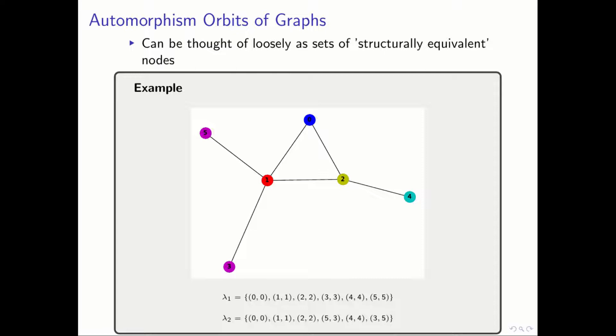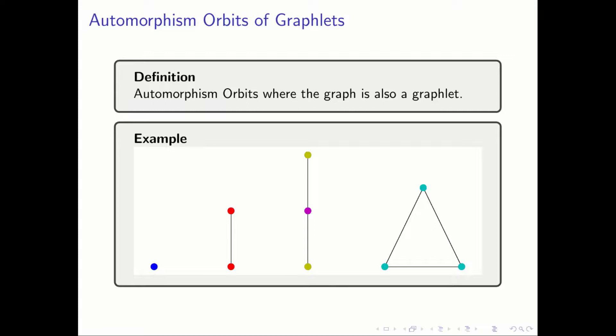An automorphism orbit of a graph is a collection of vertices that have a structurally equivalent position in a graph. This example is a graph colored to illustrate the distinct orbits, and we can see that the vertices 3 and 5 in magenta are part of the same orbit while the other vertices are in their own orbits. Since graphlets themselves are graphs, we can have an automorphism orbit of graphlets just as we can have an automorphism orbit of graphs more generally. The examples are again the singlet, barbell, wedge, and triangle graphlets, but this time colored by their orbits.